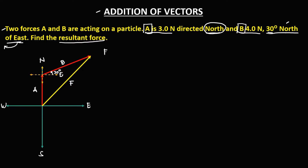To find the resultant force using the cosine law: F² = A² + B² − 2AB·cos θ. For angle theta, since we have 30 degrees and 90 degrees, the whole angle theta equals 90 + 30 = 120 degrees.